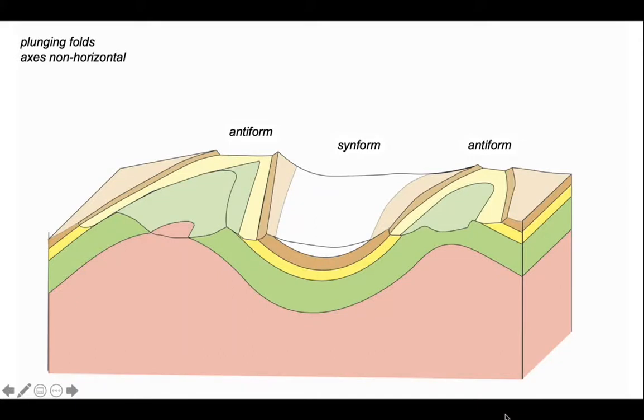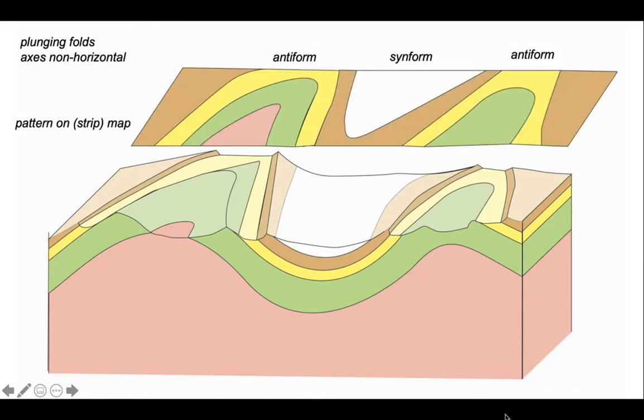And now we have a situation. The axes are not horizontal, but they dive down in one direction in the landscape. So let's think about this on a map. So here's our map strip in here. And you can see rather than our beds forming continuous strips that never come together, our layers arch around backwards and forwards through the map pattern.